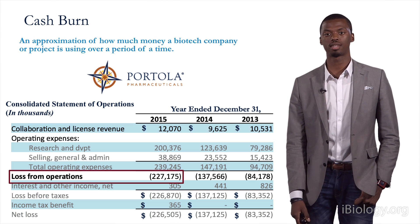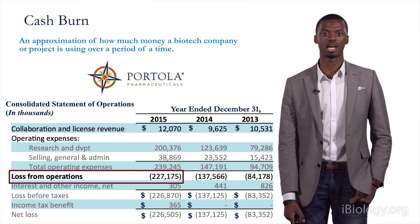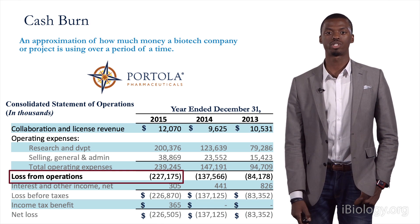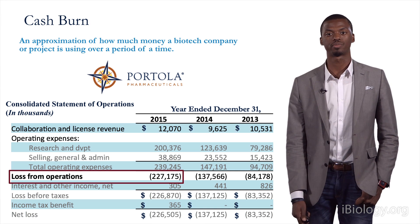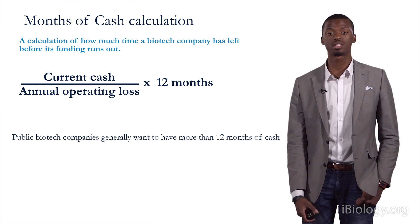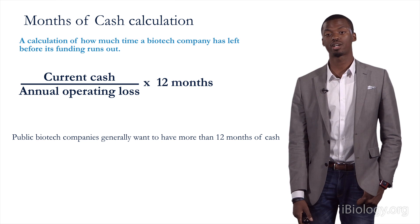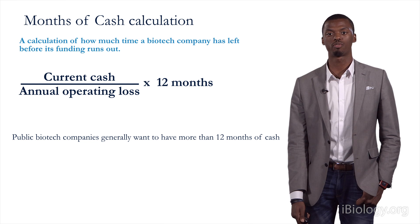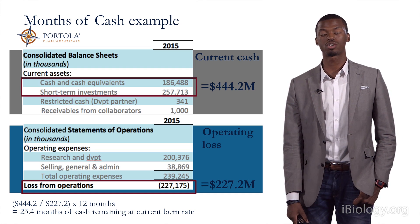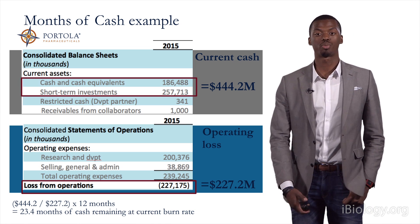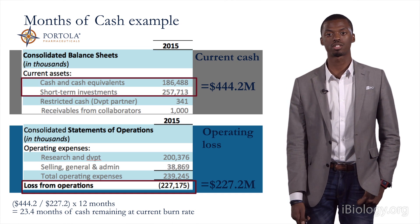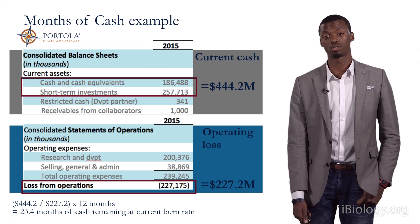We're using Portola Pharmaceuticals instead of Gilead for this example, because Gilead is a large, well-established company not burning through cash anytime soon. Portola has an operating loss of $227 million. To determine how many months of cash a company has left, take the current cash from the balance sheet and divide it by the annual operating loss, then multiply by 12 months. For Portola, cash from the balance sheet is $444 million. Dividing by the $227 million operating loss and multiplying by 12, the company has a little under two years before it has to close its doors or raise additional funding, increase revenue, or decrease costs.